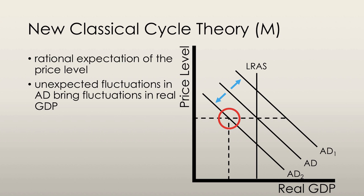Thus, as the expected price level remains the same, real GDP decreases. In the same way, if aggregate demand suddenly increases, the price level is assumed to remain the same in the short run, causing a temporary increase in real GDP.